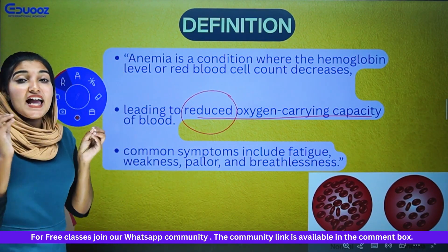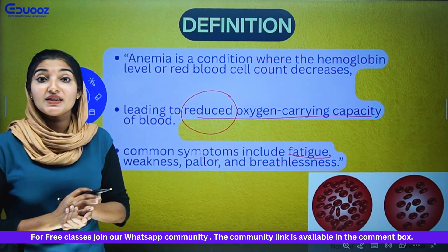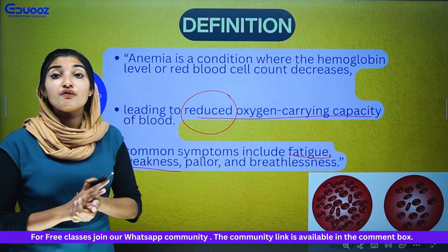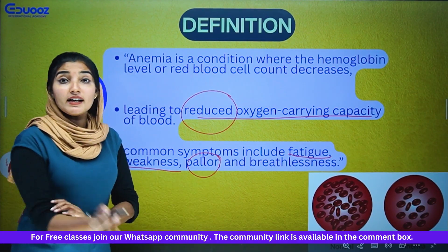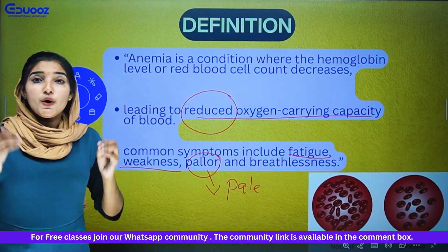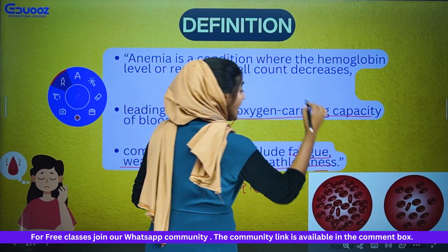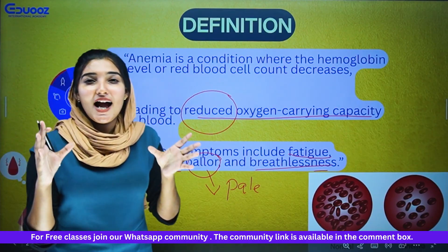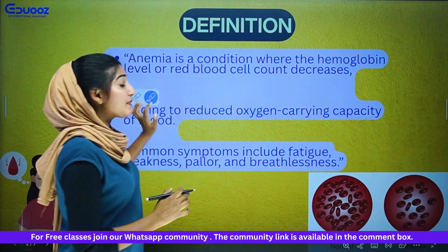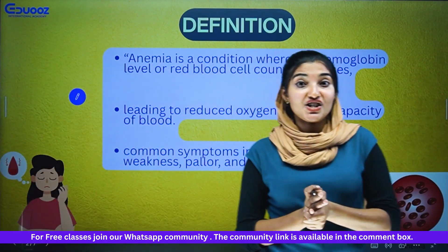Now we have the common symptoms of anemia. Fatigue — that is the feeling of weakness. The body is weak. That is called pallor — pale skin. Then breathlessness. These are the symptoms of anemia — reduced hemoglobin or RBC cell count. That is the definition of anemia.